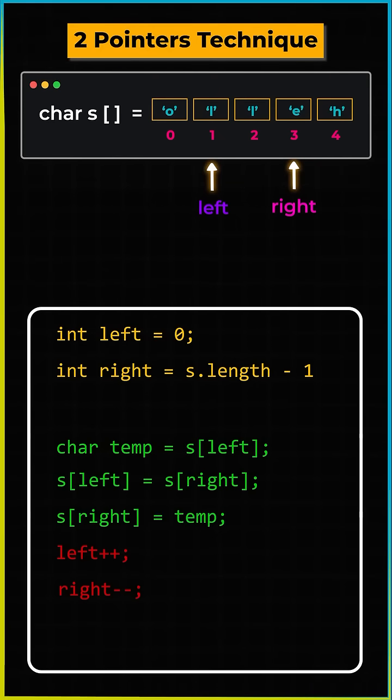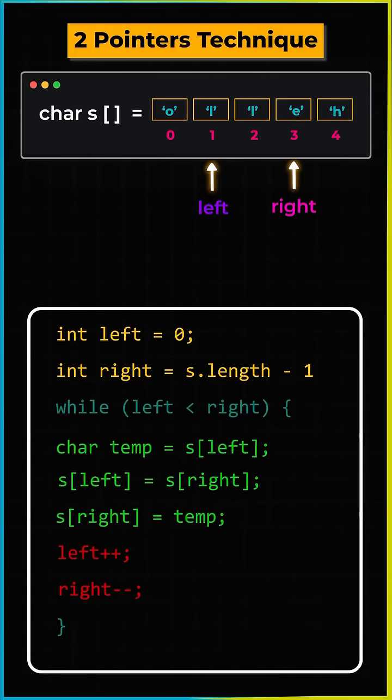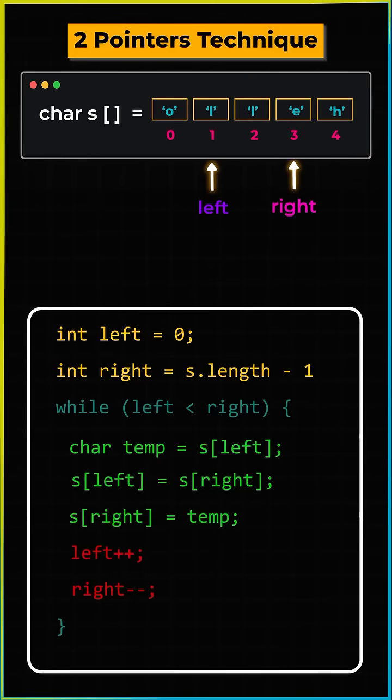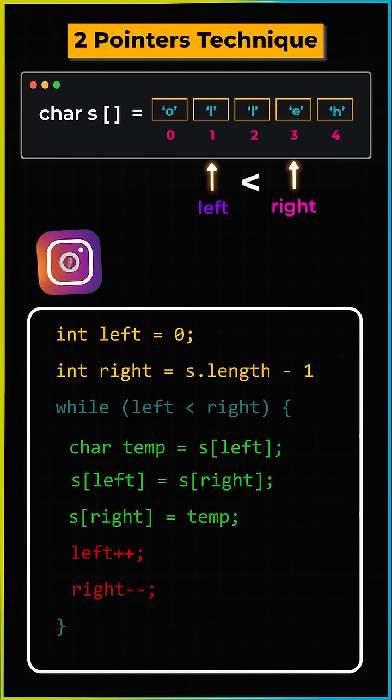To ensure that the left and right don't cross each other we will put a loop condition that is left should always be less than right and we are done.